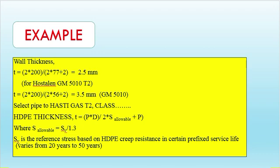For wall thickness selection of Class 2 HDPE pipe, the formula is: T = PD / (2 × S_allowable + P), where S_allowable = SY / 1.6. Wall thickness must also satisfy T ≥ 2.5 mm minimum.